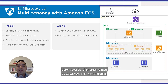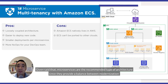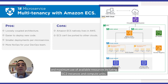Quick impressive fact: by 2022, 90% of all new apps will be implemented with a microservice architecture. Microservices are the recommended type of architecture since they provide a balance between modernization and maximum use of available resources, including easy-to-instance and compute units.